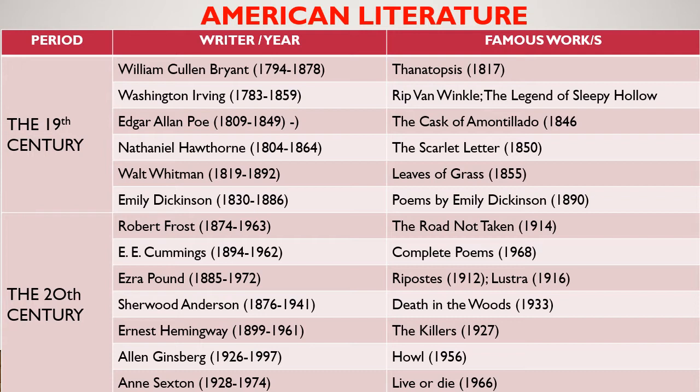And the last writer of the 19th century is Emily Elizabeth Dickinson, who used imperfect rhymes and avoided regular rhythms. She was an American poet. Little known during her life, she has since been regarded as one of the most important figures in American poetry. She was born December 10, 1830, in Amherst, Massachusetts, and died May 15, 1886, in the same place.